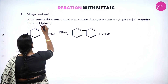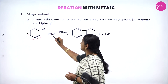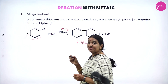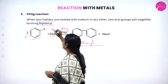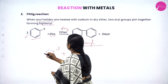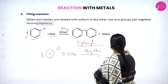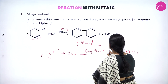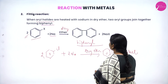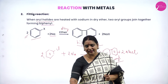The Fittig reaction uses only aryl halides — two molecules of aryl halide heated with sodium in dry ether. The two aryl groups couple to form biphenyl (diphenyl), releasing 2NaX. For example, two molecules of chlorobenzene with 2Na in dry ether give biphenyl and 2NaCl. The difference: Wurtz-Fittig uses one alkyl halide and one aryl halide; Fittig uses two aryl halide molecules.